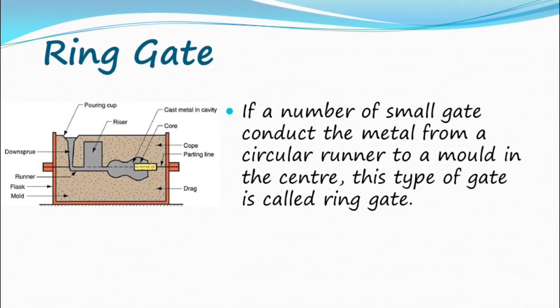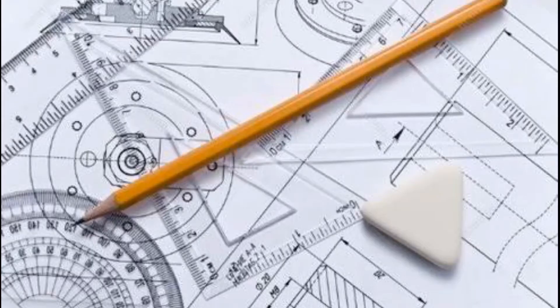Ring gate: If a number of small gates conduct the metal from a circular runner to a mold in the center, this type of gate is called a ring gate.